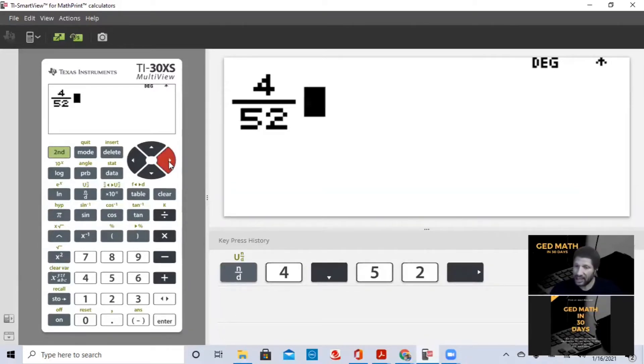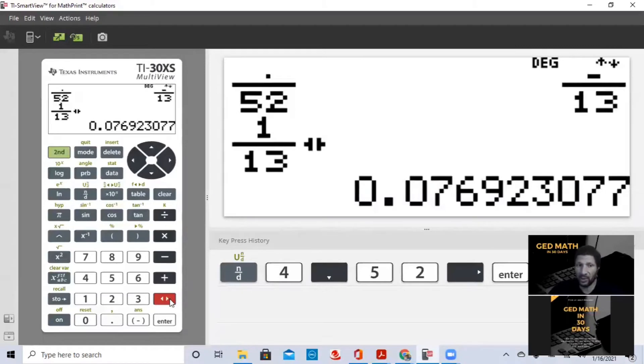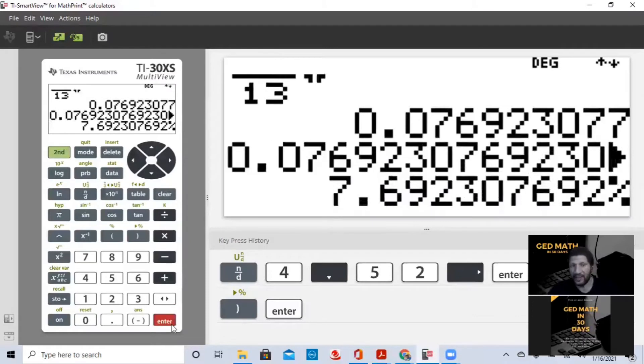So the simple probability is the chance of one thing happening. The chance of me picking a king out of a deck of cards is 4 out of 52. When I hit enter, it gives me my fraction. So I have a 1 in 13 chance. If I wanted to know the decimal, I have a 0.077 chance. Or if you want to round it to the nearest hundredth, it would be 0.08. I have an 8% chance. I can convert that to a percentage, and I have a 7.69% chance. That's how easy simple probability is.